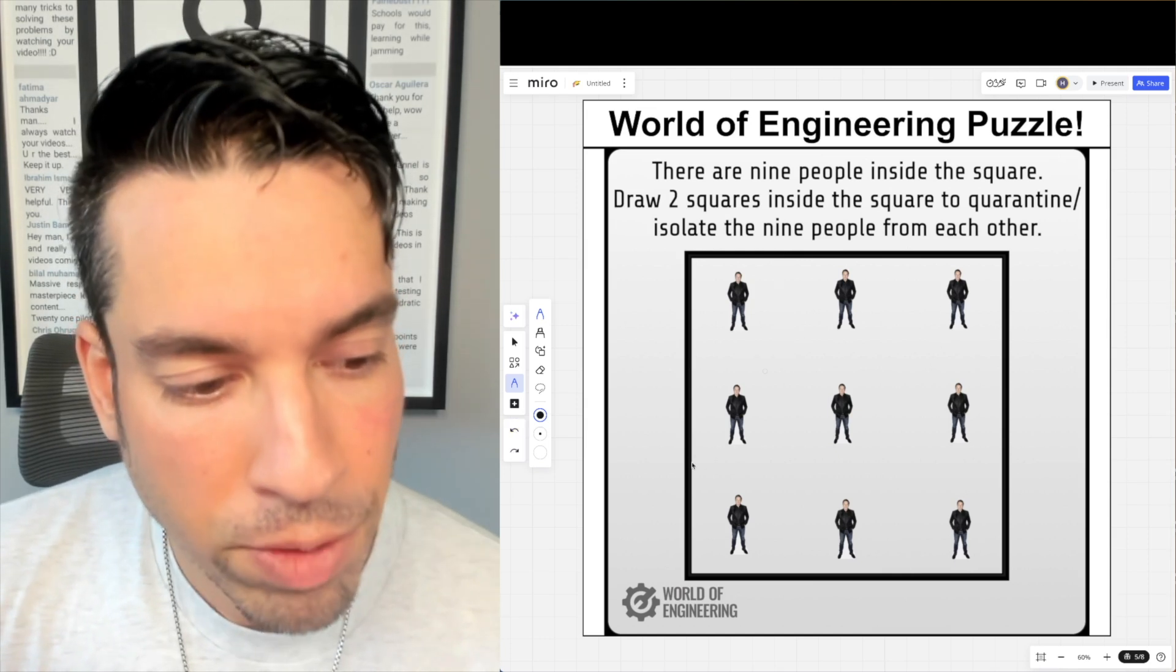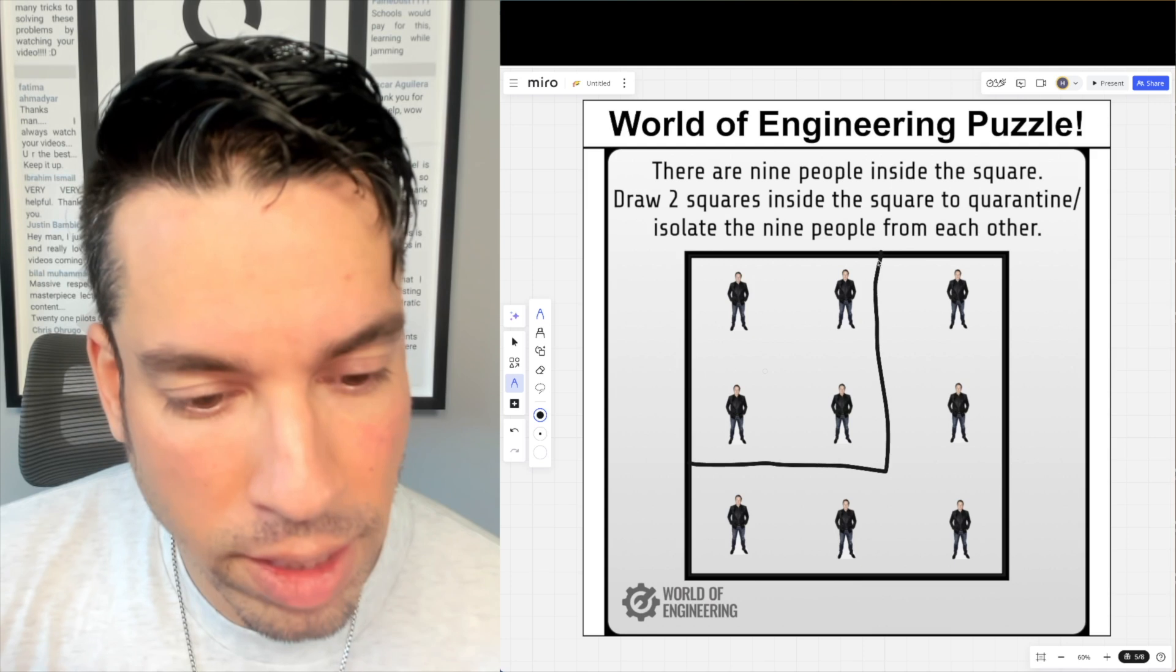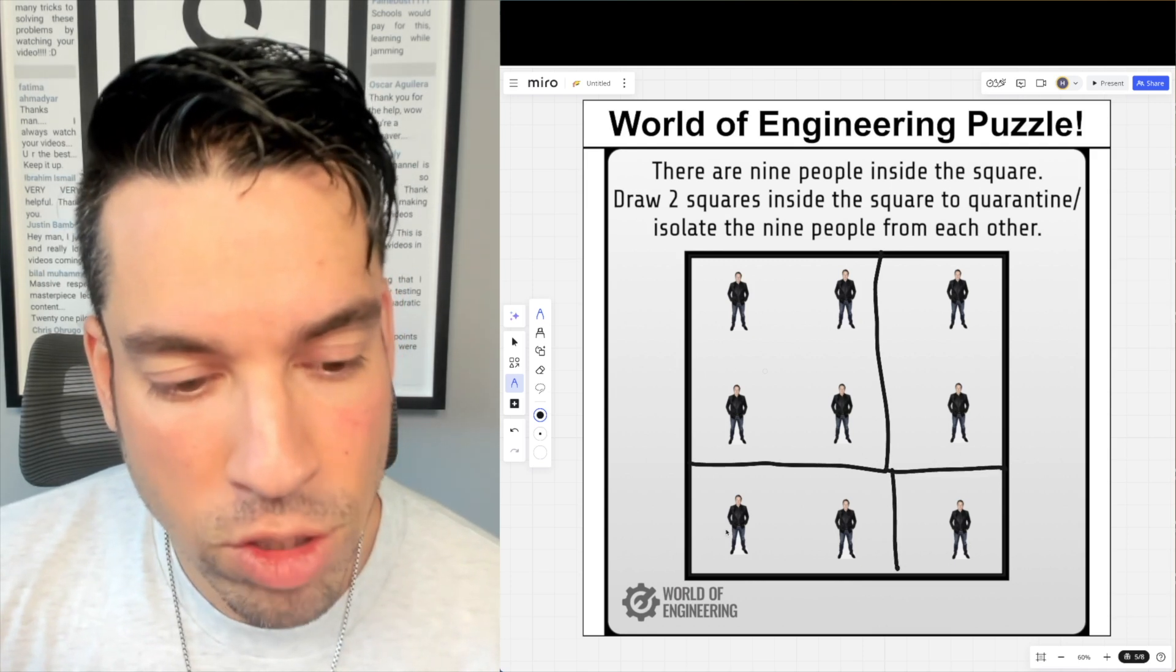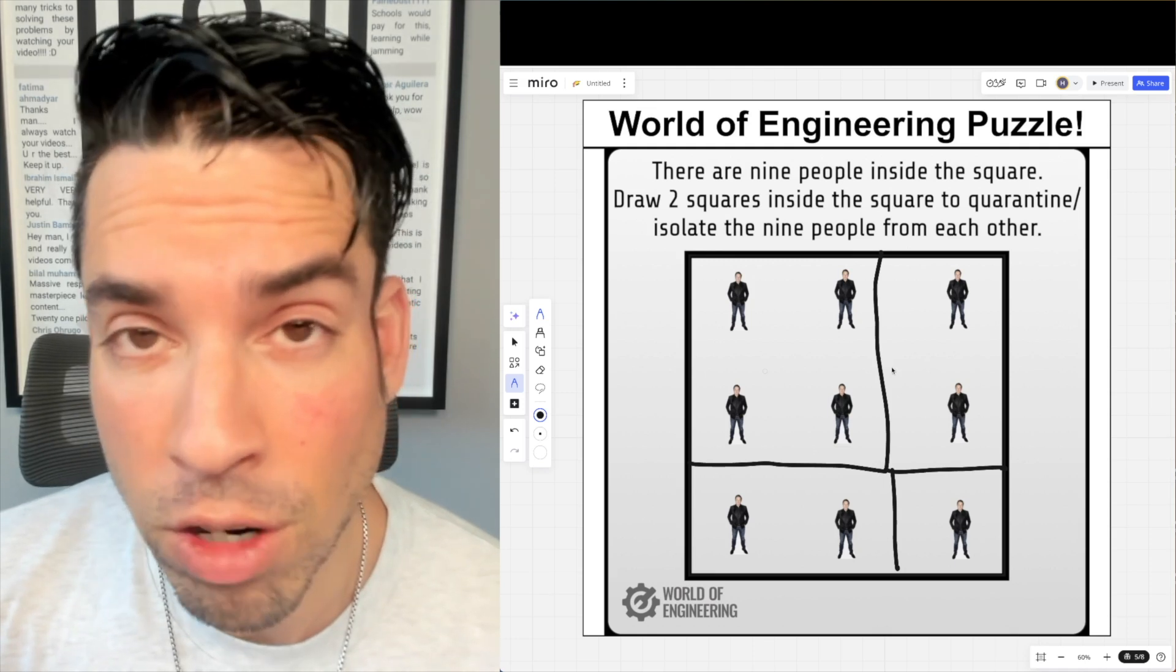Even if we draw a larger square like this and another smaller square like this, we've got four there, one there, and these two and these two are in a shared zone. So as you can see, this is quite a tricky puzzle, but the key is all about the orientation of the square.